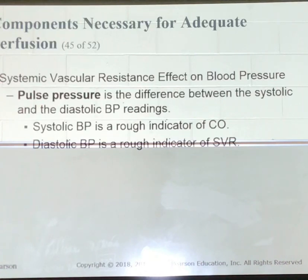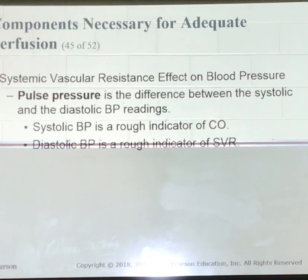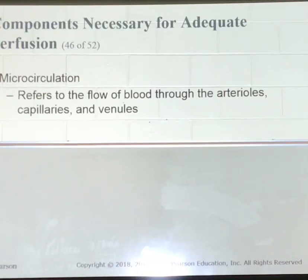If the systolic blood pressure is decreasing, it is an indication of a diminished cardiac output. The pulse pressure is the difference between the systolic and the diastolic pressure readings. A narrow pulse pressure is defined as being less than 25 percent of the systolic blood pressure. Microcirculation is the flow of blood through the smallest blood vessels — the arterioles, the capillaries, and the venules.